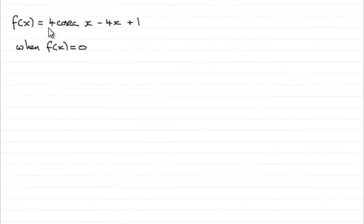Okay, we're given that f(x) equals 4 cosec x minus 4x plus 1, and when f(x) equals 0,